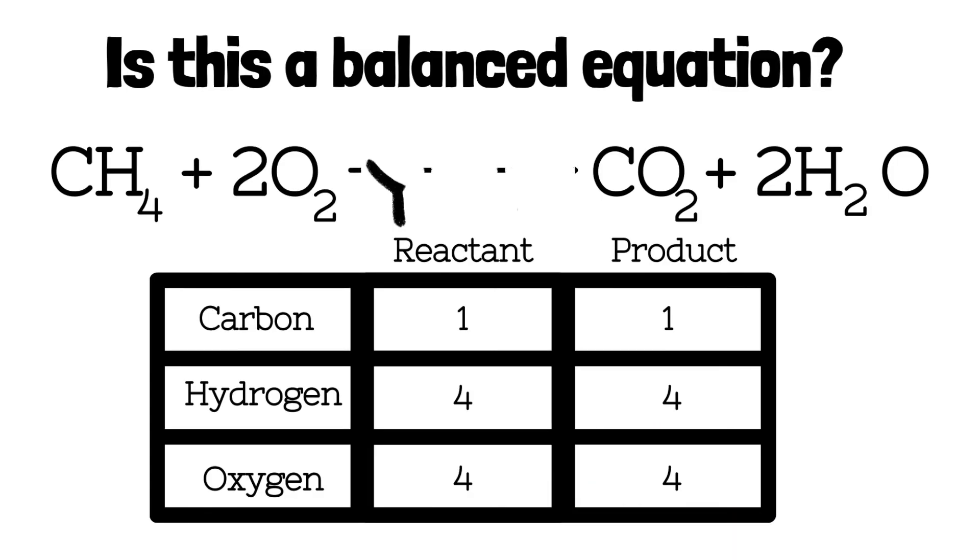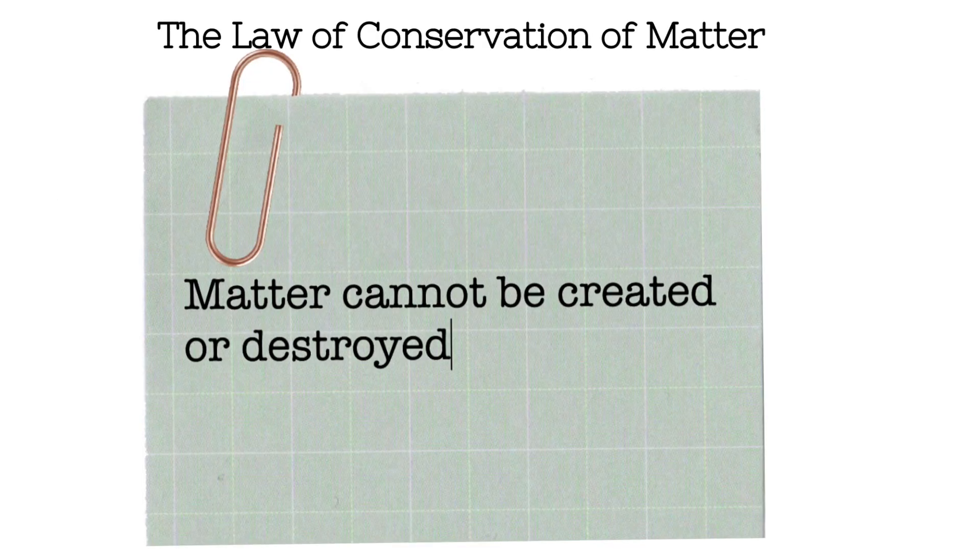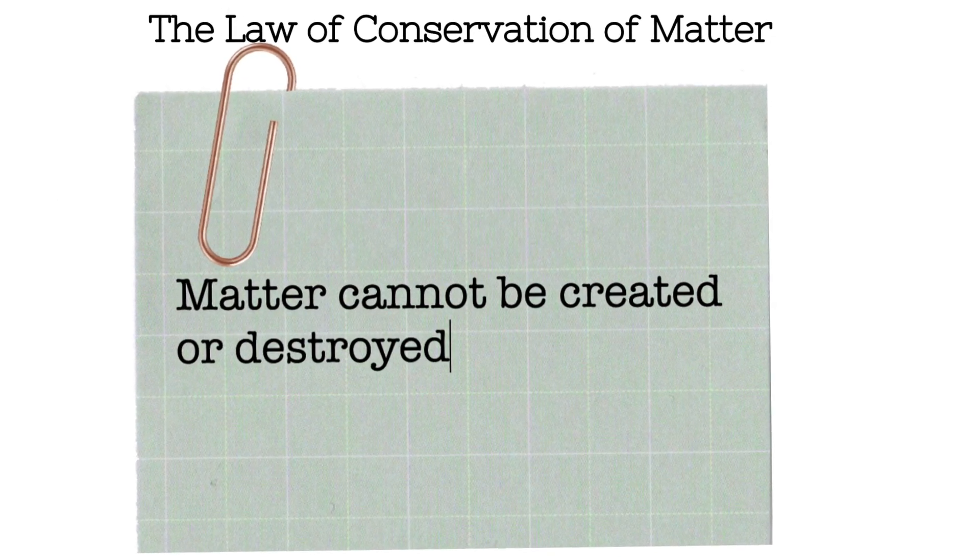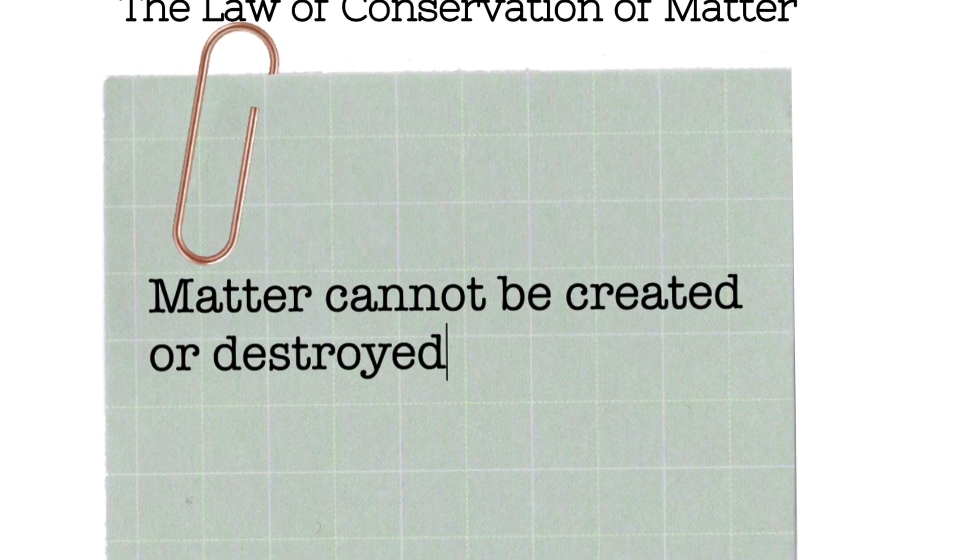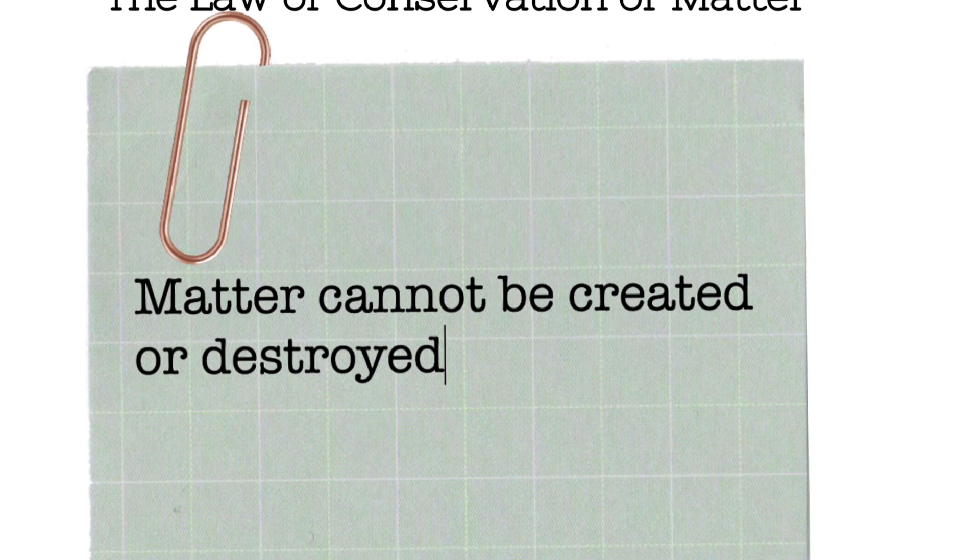Finally, we look at the chart and if the reactant side is the same as the product side, then yes, we have a balanced equation. And of course, a balanced equation proves the law of conservation of matter because matter was not created or destroyed in this chemical reaction.